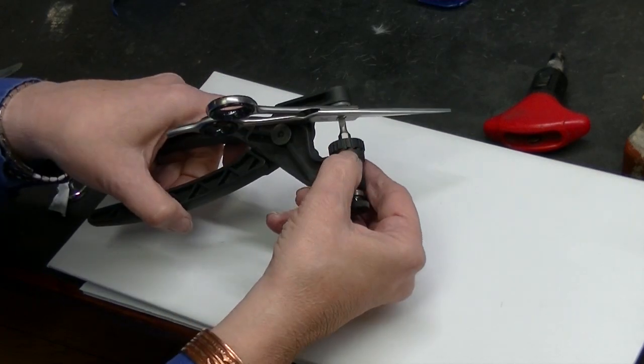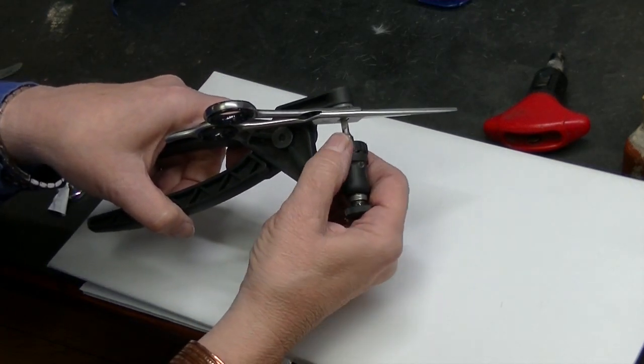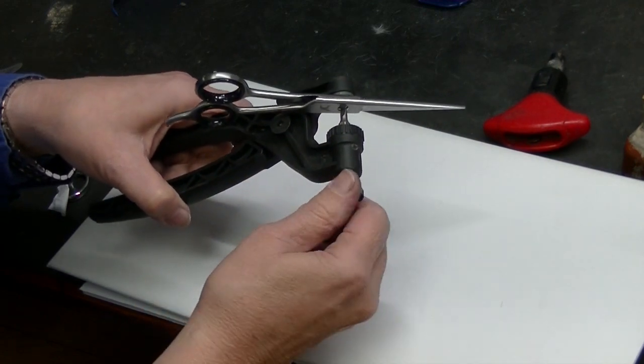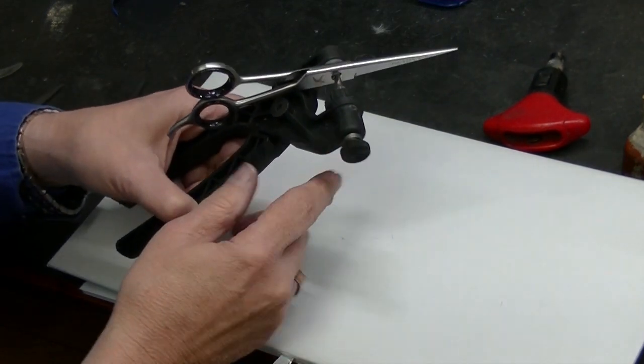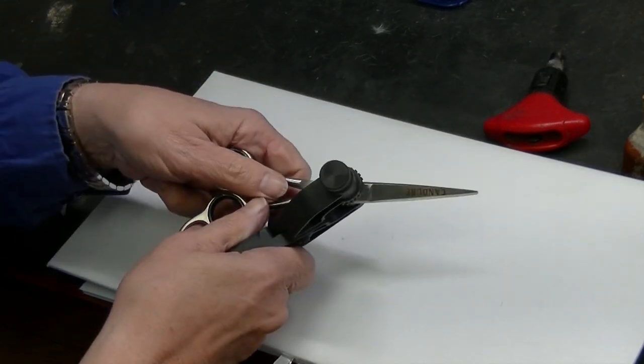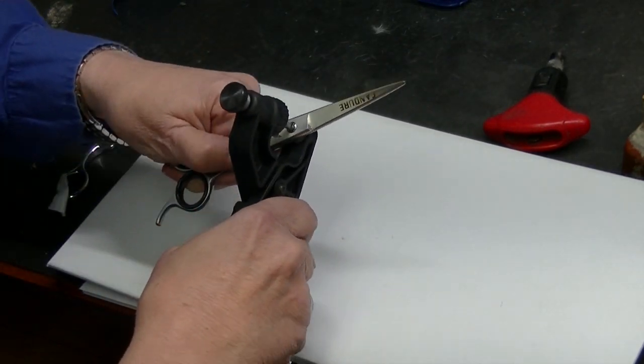Close it down. You see how these are not lined up. You want to have it so it clicks into place. Then you can adjust this a little bit tighter. To loosen it, of course you're turning it left to loosen.